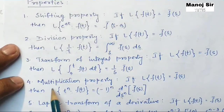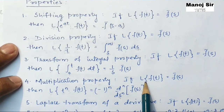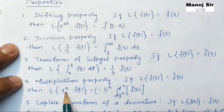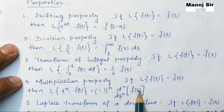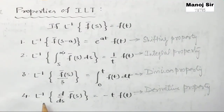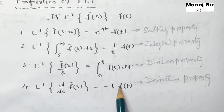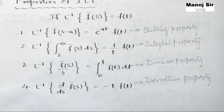The multiplication property states: if Laplace transform of f(t) equals f-bar of s, then Laplace transform of t to the power n into f(t) equals minus 1 to the power n times the derivative of f-bar of s with respect to s. Putting n equals 1: Laplace transform of t into f(t) equals minus of the first derivative of f-bar of s with respect to s. Therefore inverse Laplace transform of the first derivative of f-bar of s equals minus t into f(t). Multiplication property in Laplace transform becomes derivative property in inverse Laplace transform.